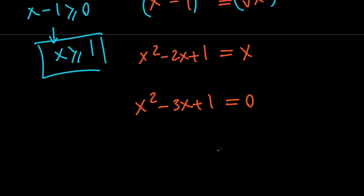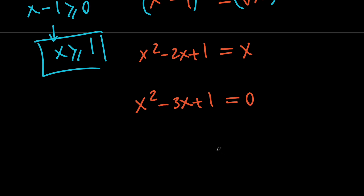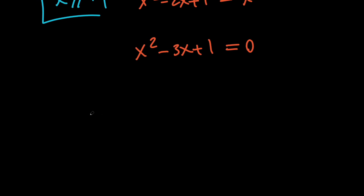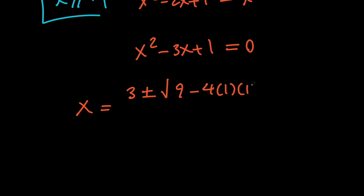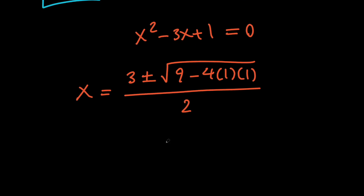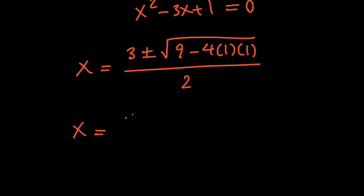Next, let's use the quadratic formula to solve for x. So we're going to have x equals 3 plus or minus the square root of 9 minus 4 times 1 times 1, all divided by 2, which means that x equals 3 plus or minus the square root of 5, all divided by 2.